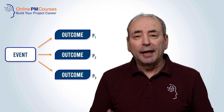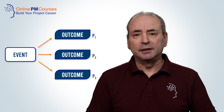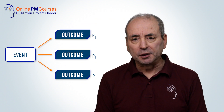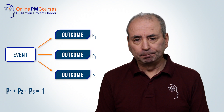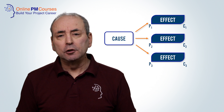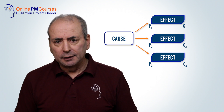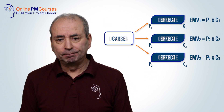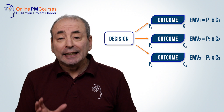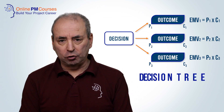We can also use expected monetary value to support our decision-making processes. We can assume that any single event, like a decision, can have a number of possible outcomes. The total probability of all those possible outcomes will necessarily add up to 1. And to help us we can draw a cause and effect tree to help us calculate the EMV for each of the outcomes.